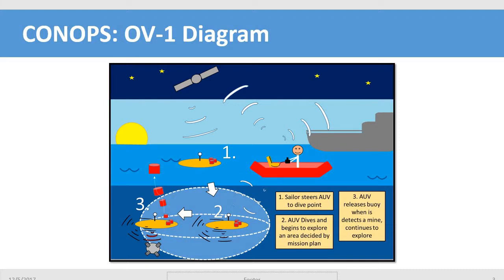Also shown on this OV-1 diagram are the communication signals. There are communication signals passing to and from the launch boat from its mothership as well as to the satellite for surface communications. And you can also see the underwater acoustic modem communications between the launch boat and the AUV.